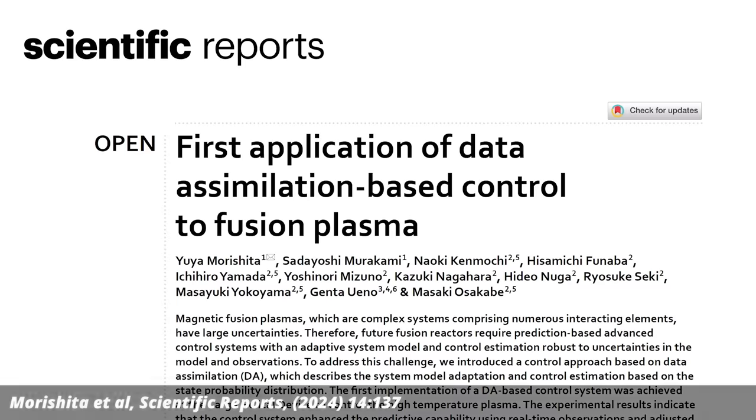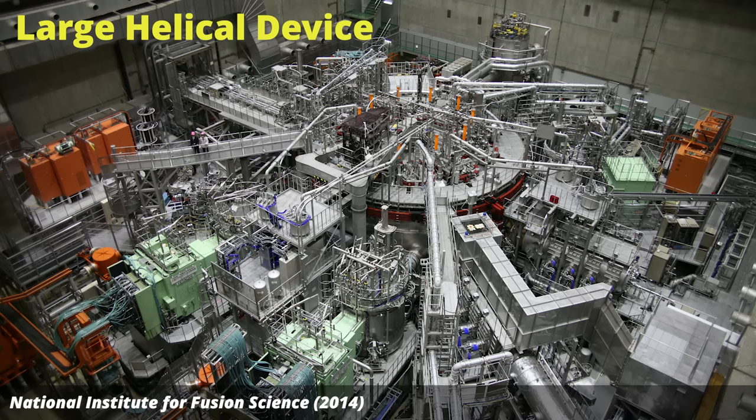This then brings me to the new paper, which did a similar thing to what the DeepMind people did last year, but with a new method on a different device. This was done by a team of researchers from Japan and the United States at the large helical device in Japan. This is the stellarator, the second largest in the world after Wendelstein 7X.